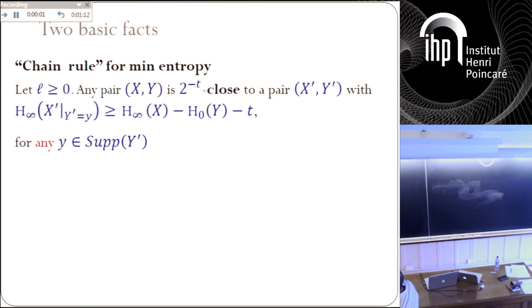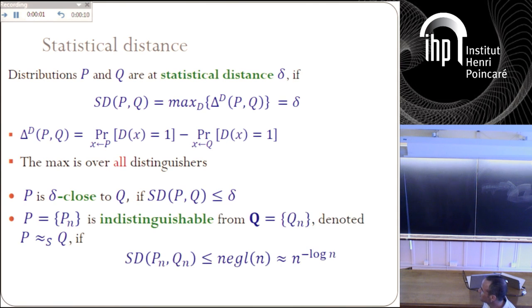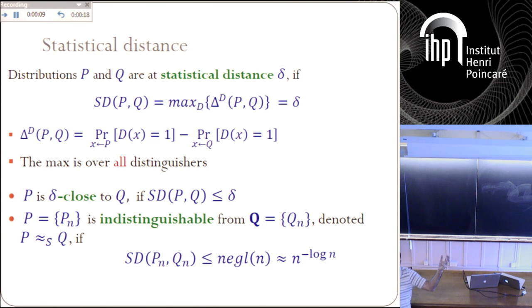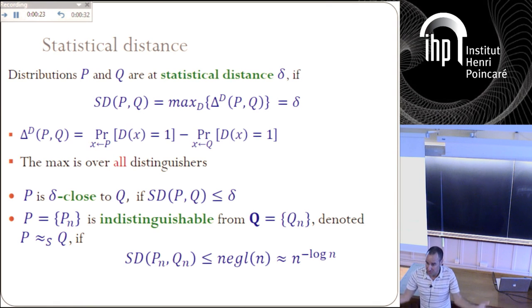Two basic facts. The first fact is what's called the chain rule for min entropy. There's not really a chain rule for min entropy — it's a more subtle notion. But there is, like, a chain rule for min entropy. When you condition on a random variable Y, for every number t, with probability 2 to the minus t, you didn't lose more in the min entropy than the length of Y — like you would have lost if you spoke about Shannon entropy — plus t.